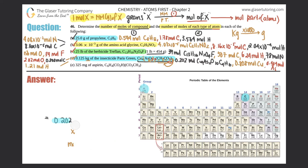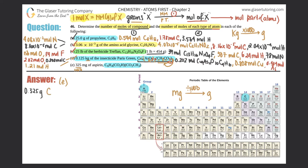Part E starts with milligrams, but we need grams to convert to moles. To go from milligrams to grams, divide by 1000. So 325 mg ÷ 1000 = 0.325 grams of aspirin. Now let's simplify the compound formula by combining all carbons and oxygens from the different parts.